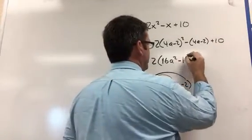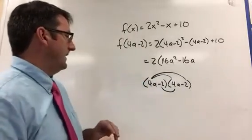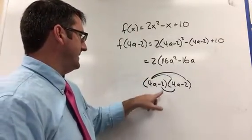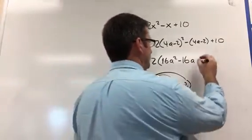together, you get negative 16a. And then negative 2 times negative 2 is positive 4.